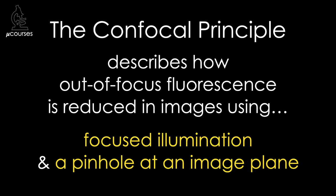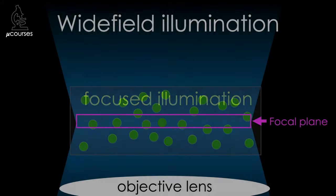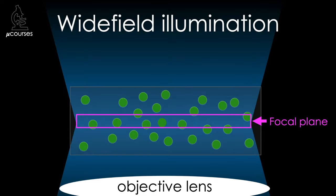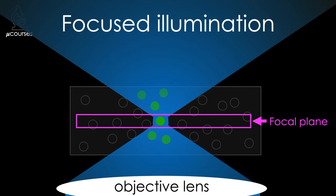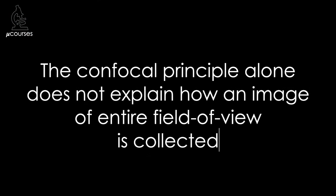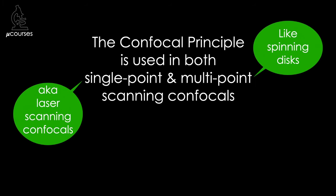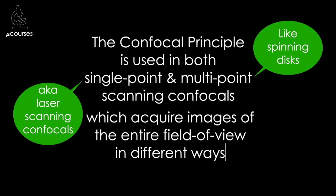Let's work through the details of the confocal principle, beginning with the first feature: focused illumination. Under wide-field illumination, the entire field of view is illuminated. Focused illumination means that the illumination light is focused into a small point in the focal plane of the objective lens. The confocal principle described here does not alone explain how an image of the entire field of view is collected — the confocal principle is used in both single-point and multi-point scanning confocals, which acquire images of the entire field of view in different ways. How these instruments utilize the confocal principle are topics for another microcourse.